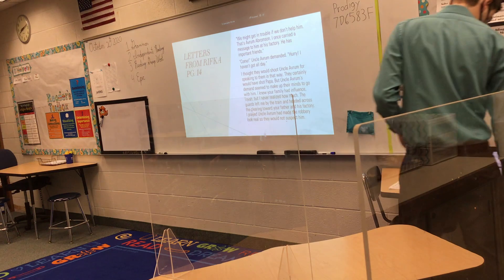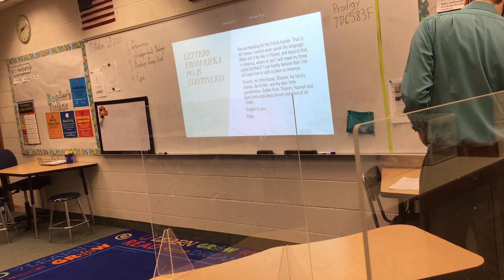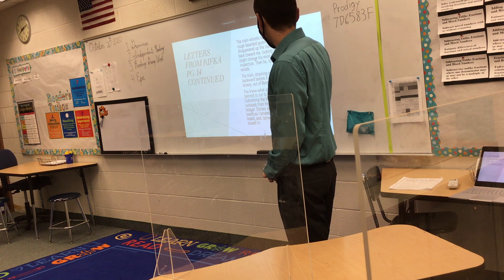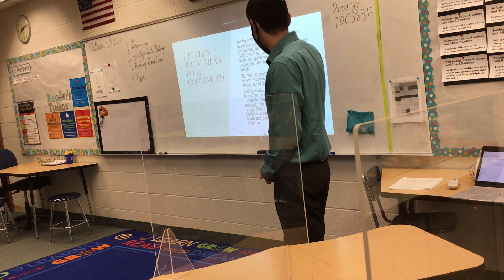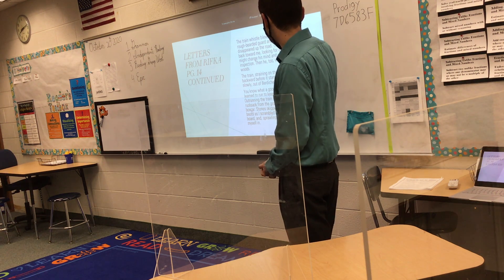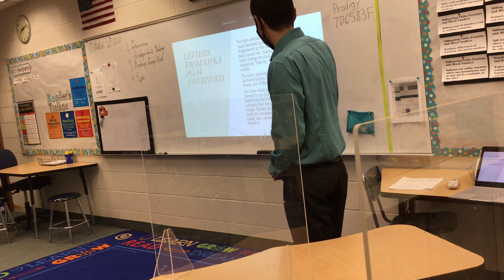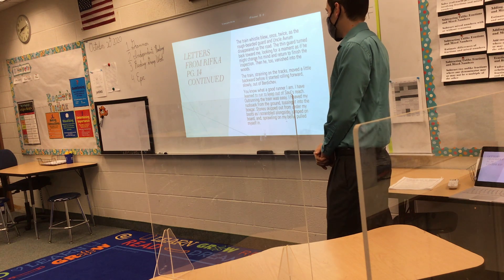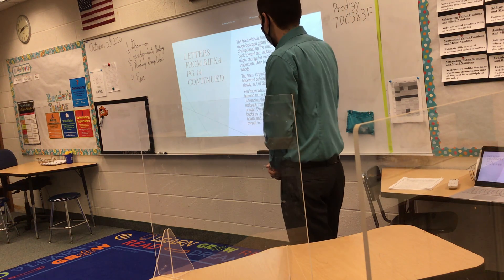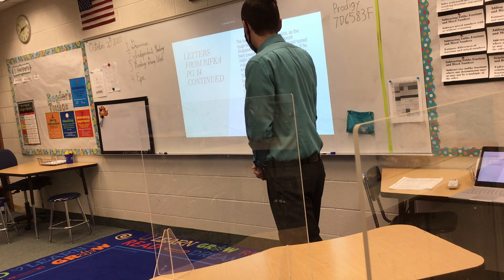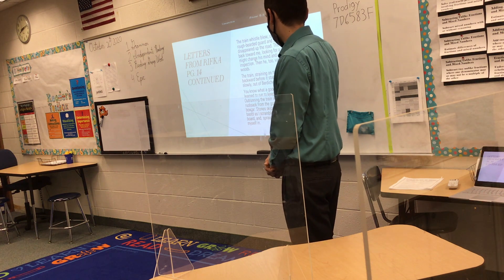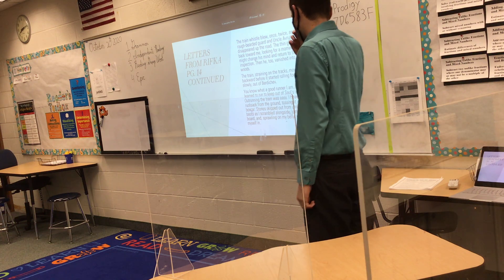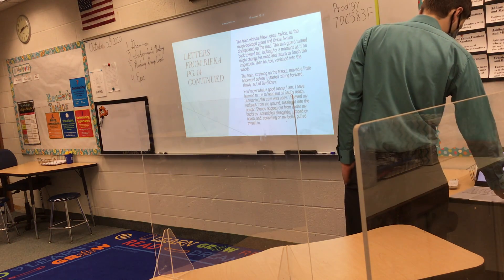The train whistle blew once, twice, as the rough bearded guard and Uncle Abram disappeared up the road. The thin guard turned fast toward me, looking for a moment as if he might change his mind and return to finish the inspection. Then he, too, vanished into the woods. The train, straining on the tracks, moved a little backward before it started rolling forward, slowly. You know what a good runner I am — I have learned to run to keep out of Saul's reach. Outrunning the train was easy. I heaved my rucksack from the ground, tossing it into the boxcar. Stones skipped out from under my boots as I scrambled alongside, jumping on board and sprawling on my belly, pulled myself in.